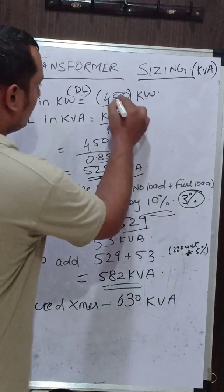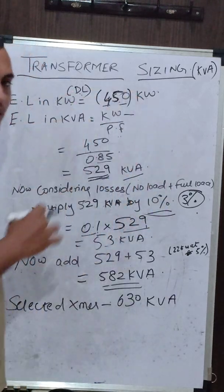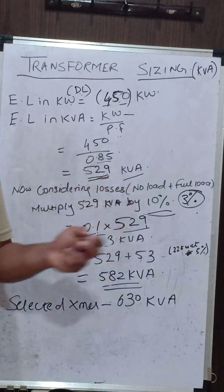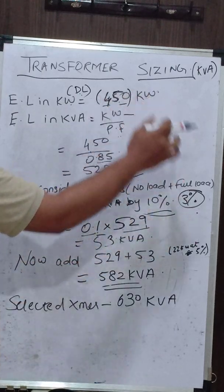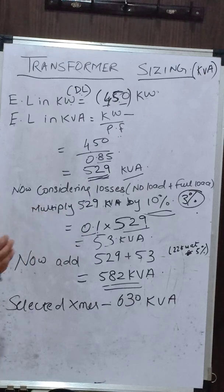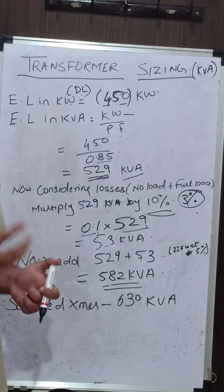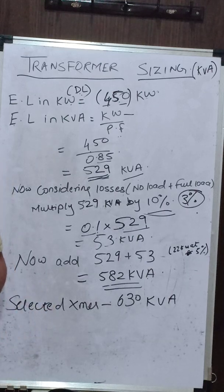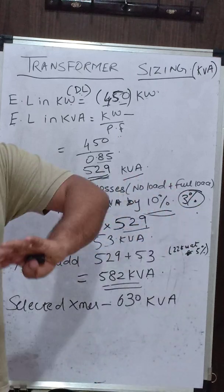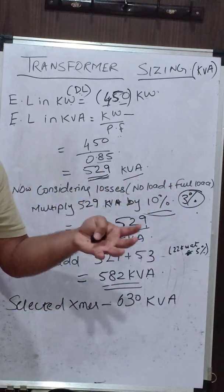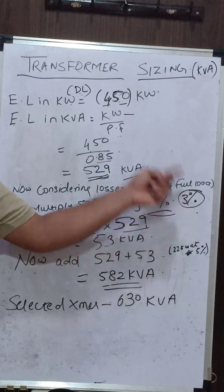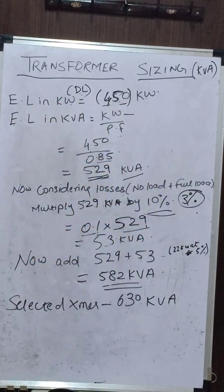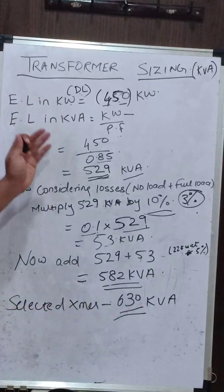The remaining 7% beyond the 3% loss allowance serves as a buffer for future load growth. For example, we considered a total electrical load of 450 kW. If in the future the client adds some electrical load to the residential building, approximately 5% of the total load — about 22 kW — the transformer still has the capacity to feed that additional load. So the 10% breakdown is roughly 3% for losses and 5-7% as a buffer for future increases. The selected transformer is 630 kVA.